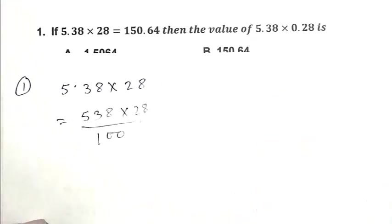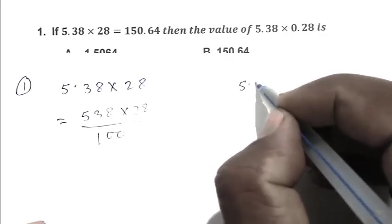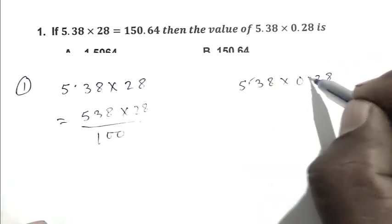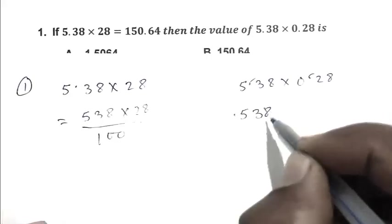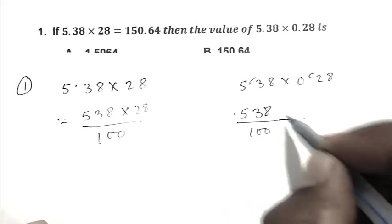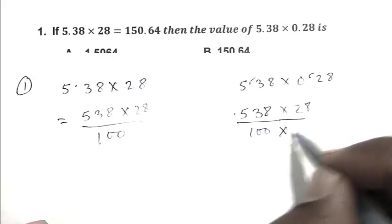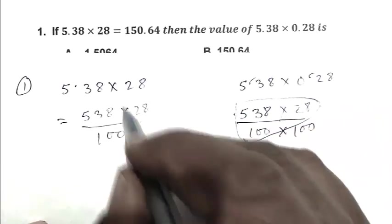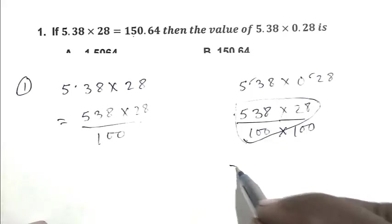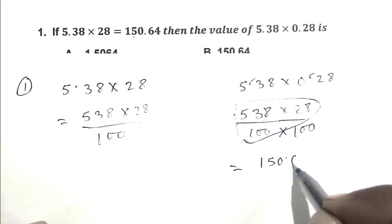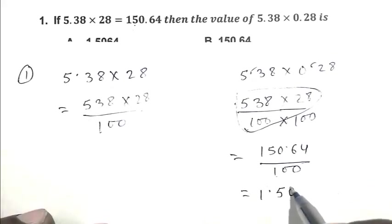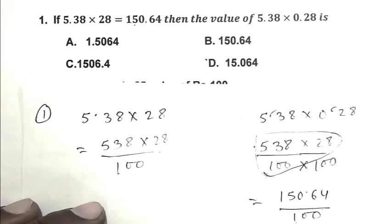After that we write this expression: 5.38 multiplied by 0.28. So eliminating the decimal point, we get 5.38 by 100 multiplied by 28 by 100. So friend, this number value is 150.64. So we write 150.64 divided by 100. So it becomes 1.5064. So A is the right answer.